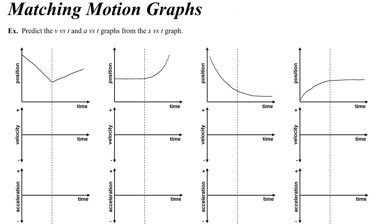In this video we're going to take a look at matching motion graphs, which is where you take a position versus time graph and predict what the velocity versus time and acceleration versus time graphs are going to look like. To do this we have a key: the slope of a position versus time graph (x vs. t) is velocity.